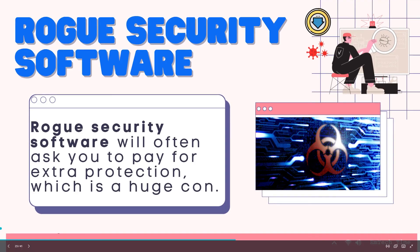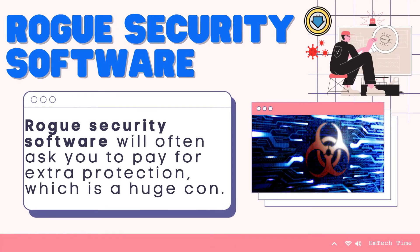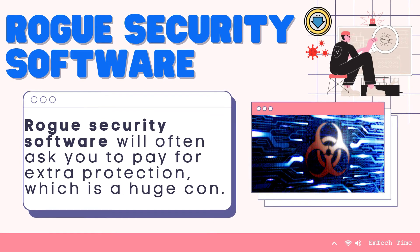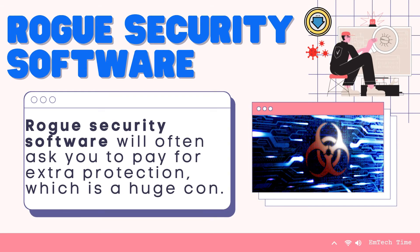The next type is rogue security software. If you're ever downloading anti-virus or anti-spyware programs, make sure you have purchased them from a legitimate source. Rogue security software will often ask you to pay for extra protection, which is a scam. The security software is completely useless and criminals have robbed you of your money.